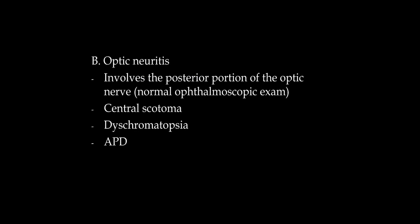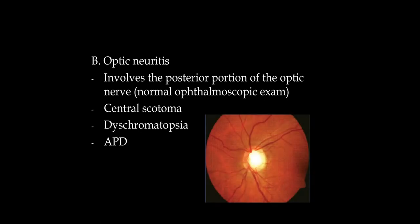Optic neuritis usually involves the posterior portion of the optic nerve. The rule is: the patient sees nothing and you see nothing abnormal. The visual loss tends to be a central scotoma. There's almost always a significant loss of color vision, called dyschromatopsia. Patients will have an afferent pupillary defect. Over time, we get atrophy of the optic nerve head, called optic nerve pallor.